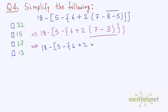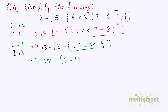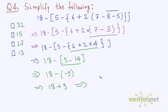7 minus 3 is 4, and this is multiplication. Now solving the braces, which have priority over brackets: we get 18 minus 5 minus 6 plus 2 times 4. Solving multiplication first: 4 times 2 is 8, and 8 plus 6 is 14. So 5 minus 14 is minus 9, and 18 minus of minus 9 equals 18 plus 9, which equals 27. So we have the answer as option C.